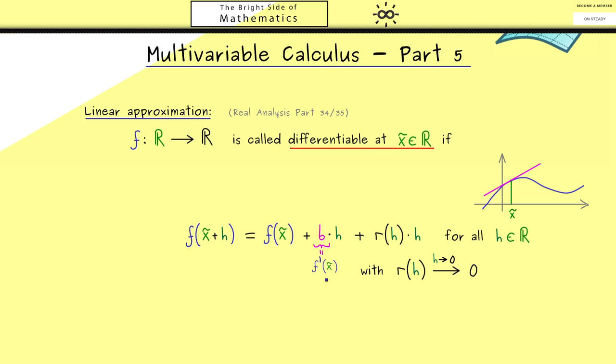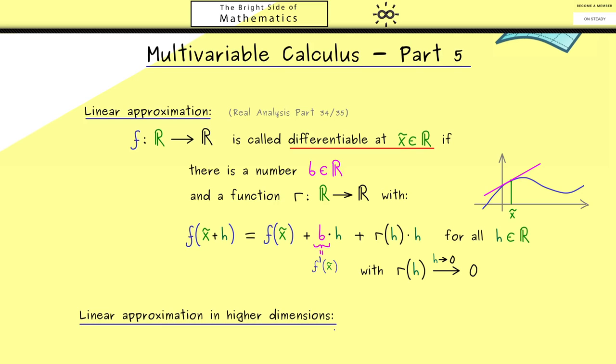And usually we denote this by f' at x tilde. Ok, then the whole definition reads that the function f is differentiable at the point x tilde if such a number b exists and such a function r exists. So then this is the definition and it tells us we find such a best linear approximation around x tilde. And exactly this is now what we want to generalize to higher dimensions. Now this means instead of b times h we take a linear map in R^n. So you see the idea is completely the same we just have to use the correct notions in higher dimensions.